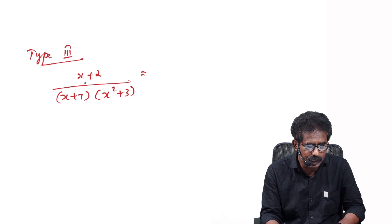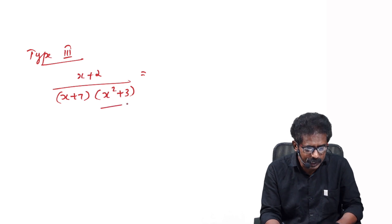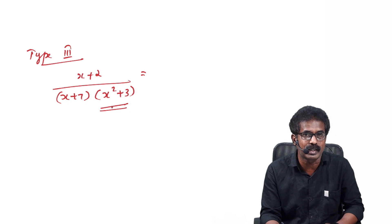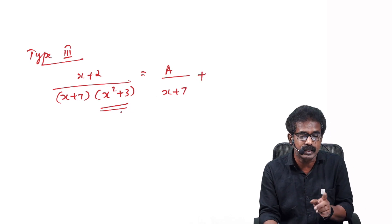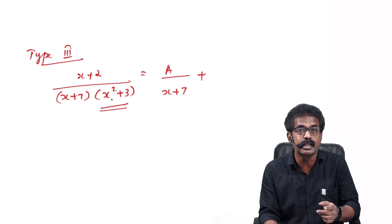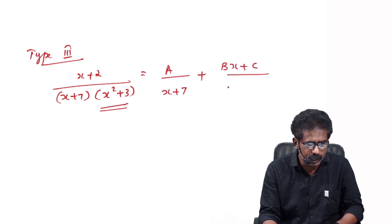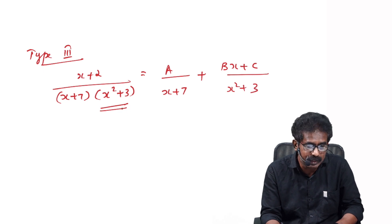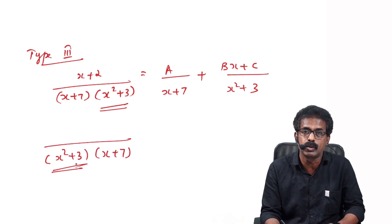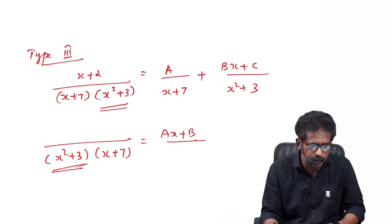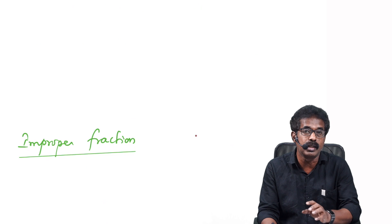The third type: consider (x+2) over (x+7)(x²+3). Here x²+3 has degree 2 but cannot be factorized. This is the third type. You write A/(x+7) for the linear factor, and for x²+3 — since it cannot be factorized — the numerator reduces one degree, so you write a linear expression: (Bx+C)/(x²+3). If the quadratic term comes first, write (Ax+B)/(x²+3) plus C/(x+7).